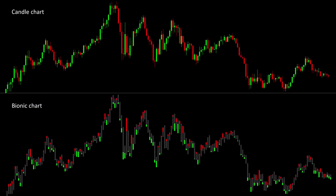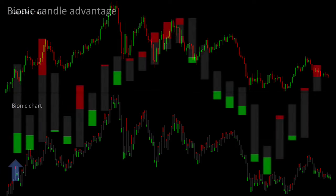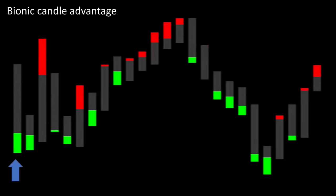Compared to the candle charts, the bionic chart is much clearer, but the highlighting of the pullbacks takes a bit of getting used to at the beginning. Let's look at a small example of this. Price came from above, and we are seeing a strong bullish pullback. The next bearish candle also shows this bullish pullback.